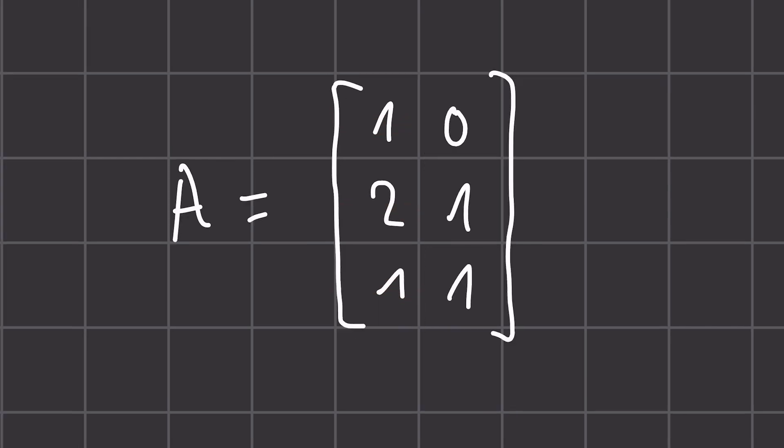Now matrices are like vectors, a collection of numbers, but this time have an additional dimension. So as you can see here, we have an ordered list of numbers here and an ordered list of numbers here. So technically, this matrix A is just a collection of these two vectors here.